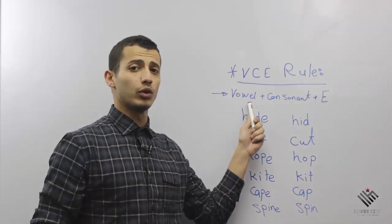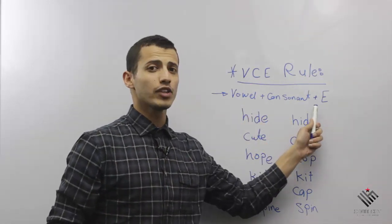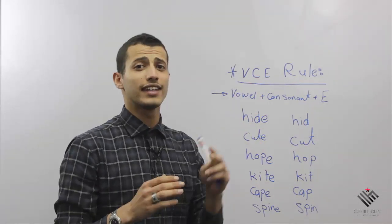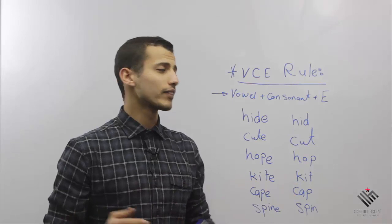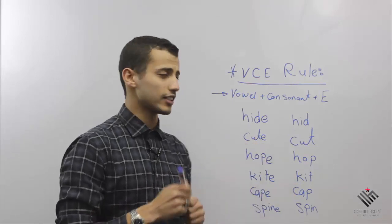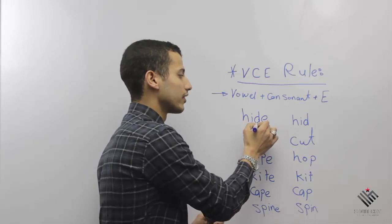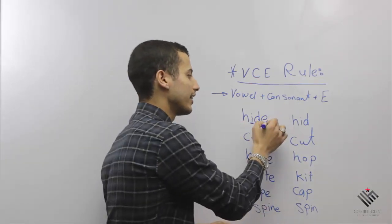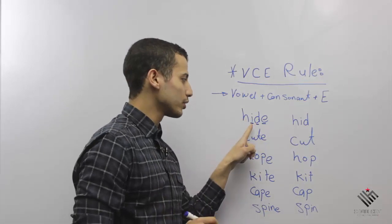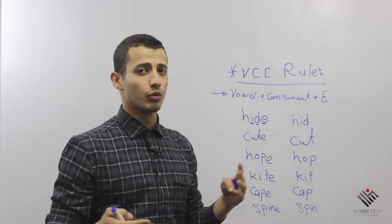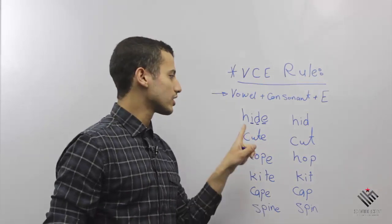Whenever you see a word that ends with a vowel, then consonant, then E, you're going to pronounce the vowel as you pronounce it in the alphabet. What does it mean? For example, this word here: see, it ends with a vowel, then D which is a consonant, and then E. So I'm going to pronounce this vowel as I pronounce it in the alphabet, which is I.